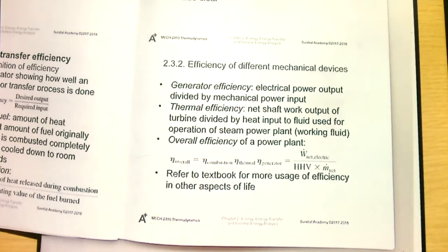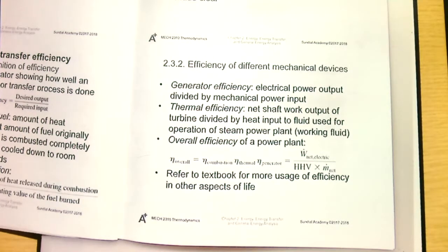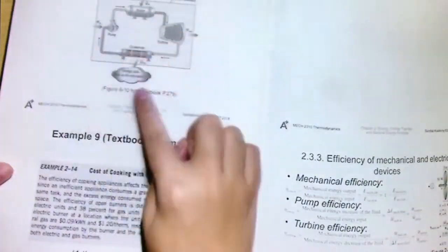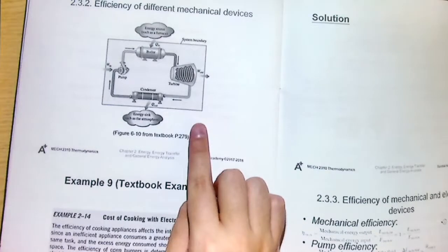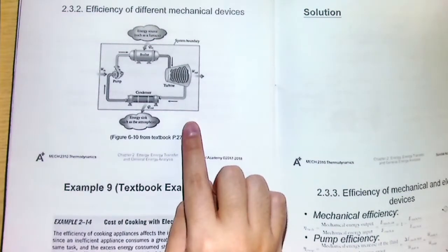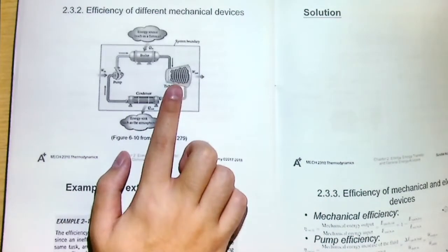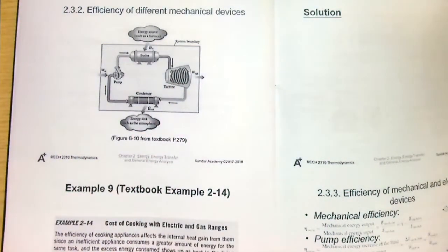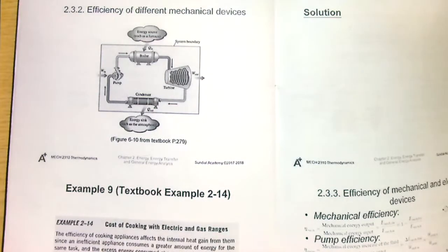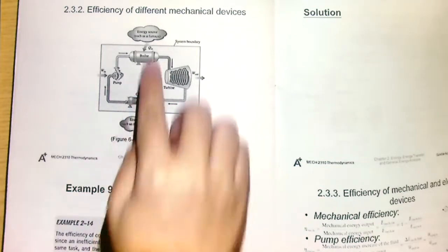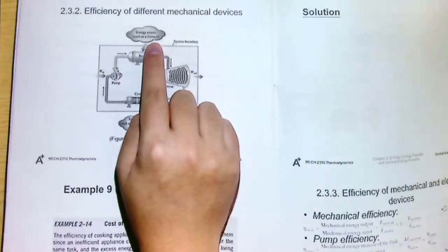Here we will talk about the efficiency of different mechanical devices, for example a generator and a turbine. We'll take an example of a steam power plant where the schematic is shown on the next page. You will see this figure again in chapter 6, where the turbine is actually connected to a generator. It generates electrical energy by taking the thermal energy from a fuel to drive a turbine.